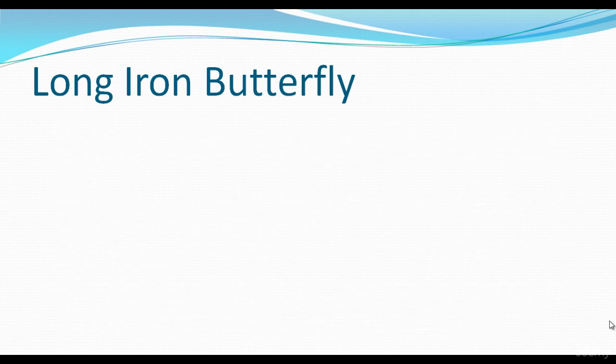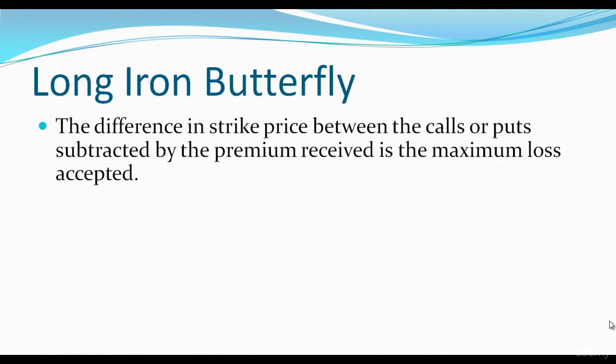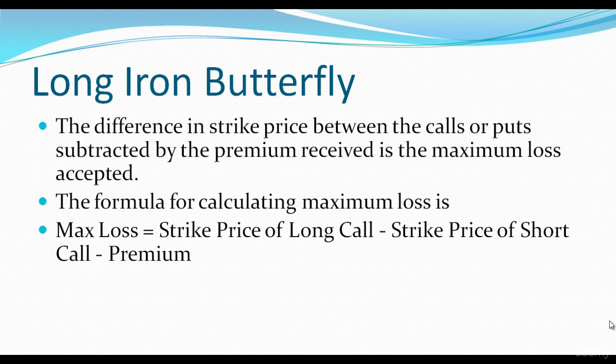The difference in strike price between the calls or puts subtracted by the premium received is the maximum loss. The formula for calculating maximum loss is: max loss = strike price of long call minus strike price of short call minus premium received.